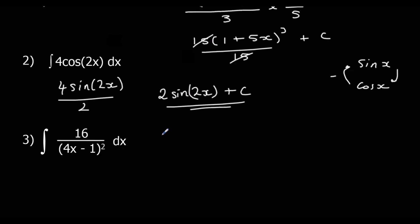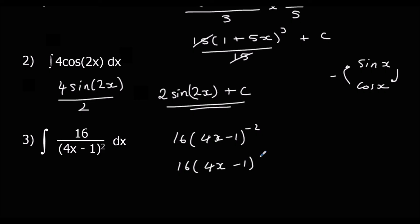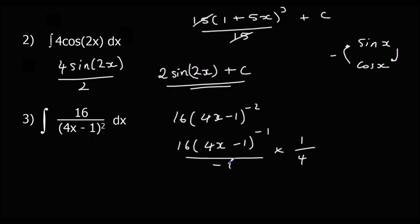The last one: rewrite as 16 times (4x − 1)^(−2). Integrate around the bracket normally — add 1 to the power and divide by the new power — giving 16 times (4x − 1)^(−1) over (−1). Then divide by the bracket differentiated, which is 4, so times by one quarter. 16 times one quarter is 4, and dividing by negative 1 gives negative 4 times (4x − 1)^(−1) plus c.